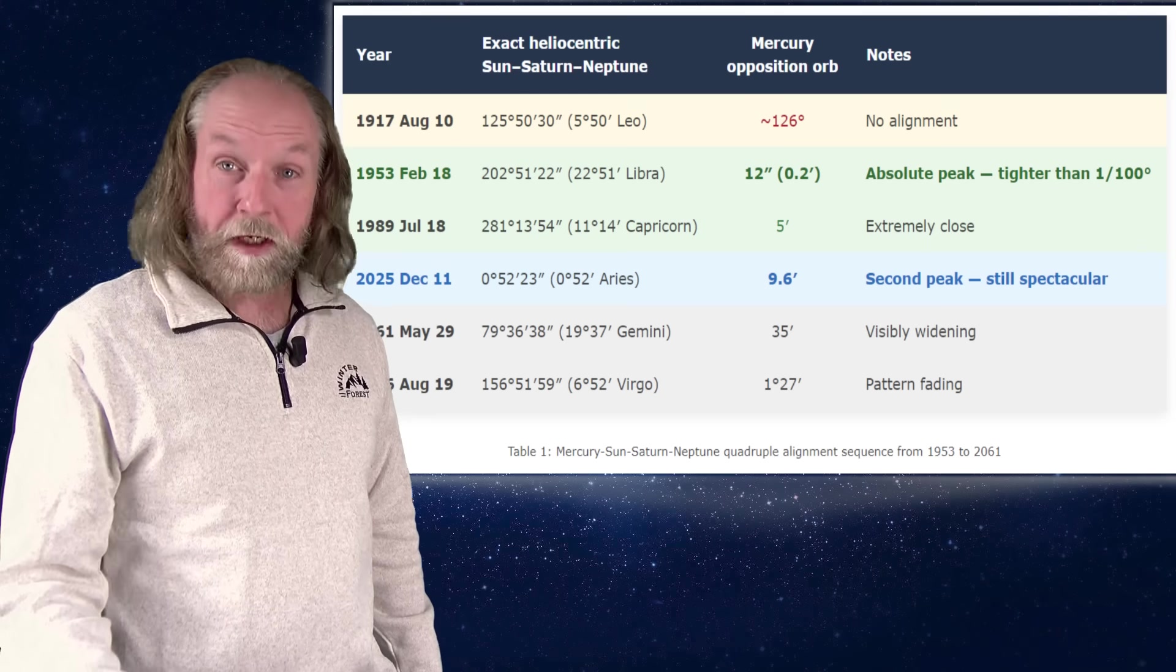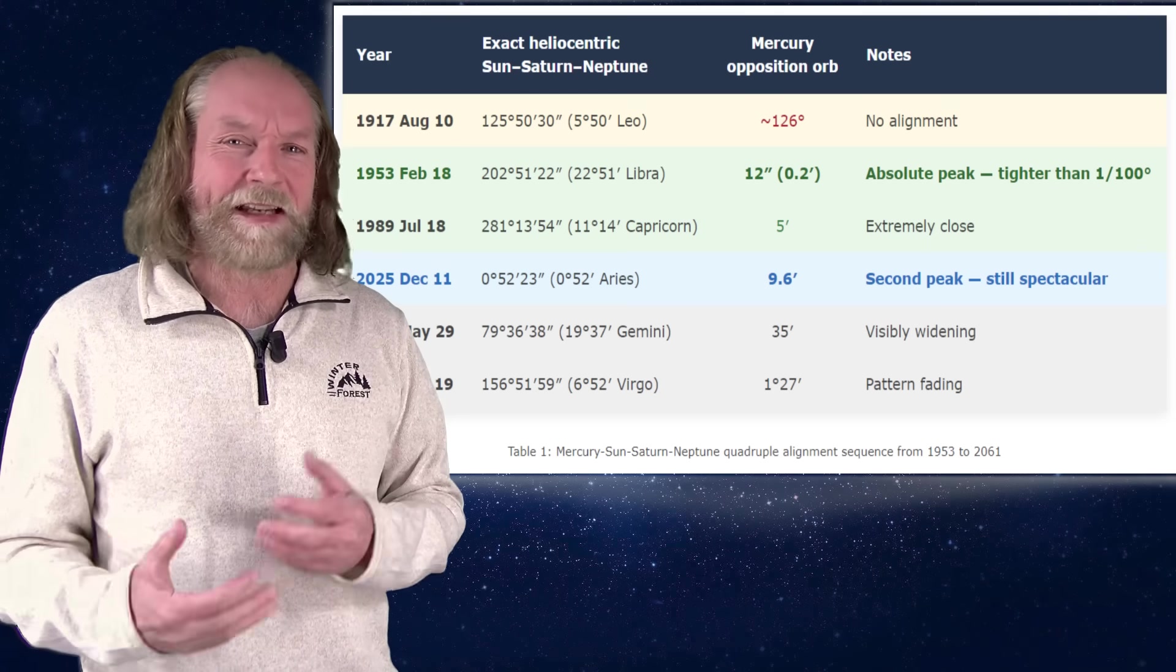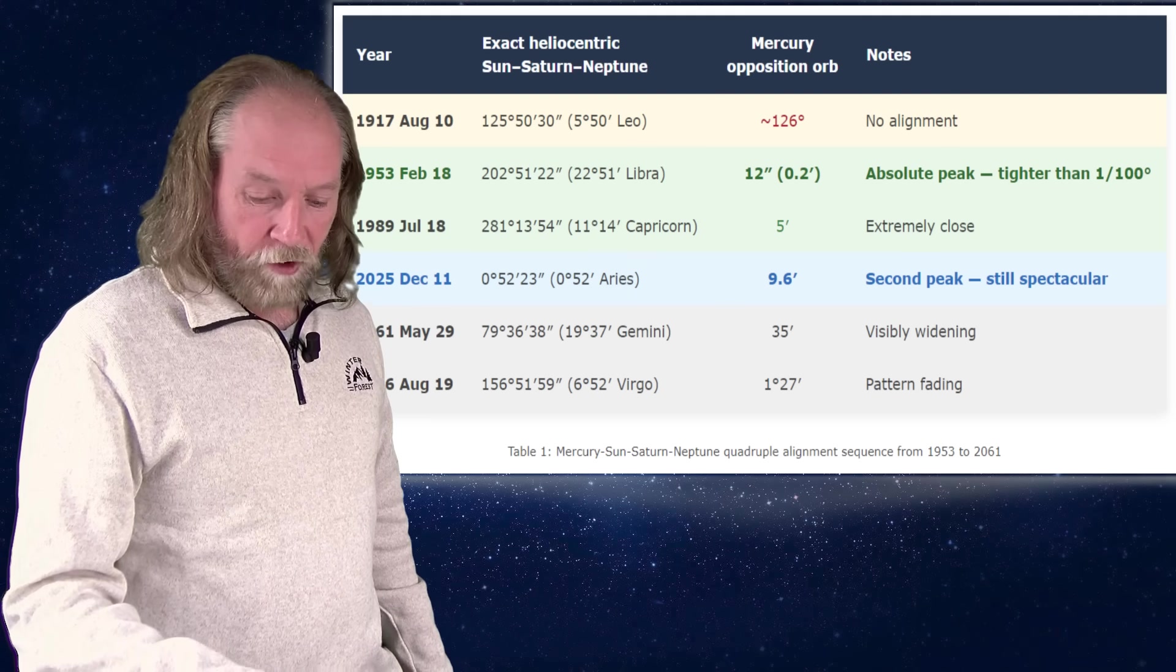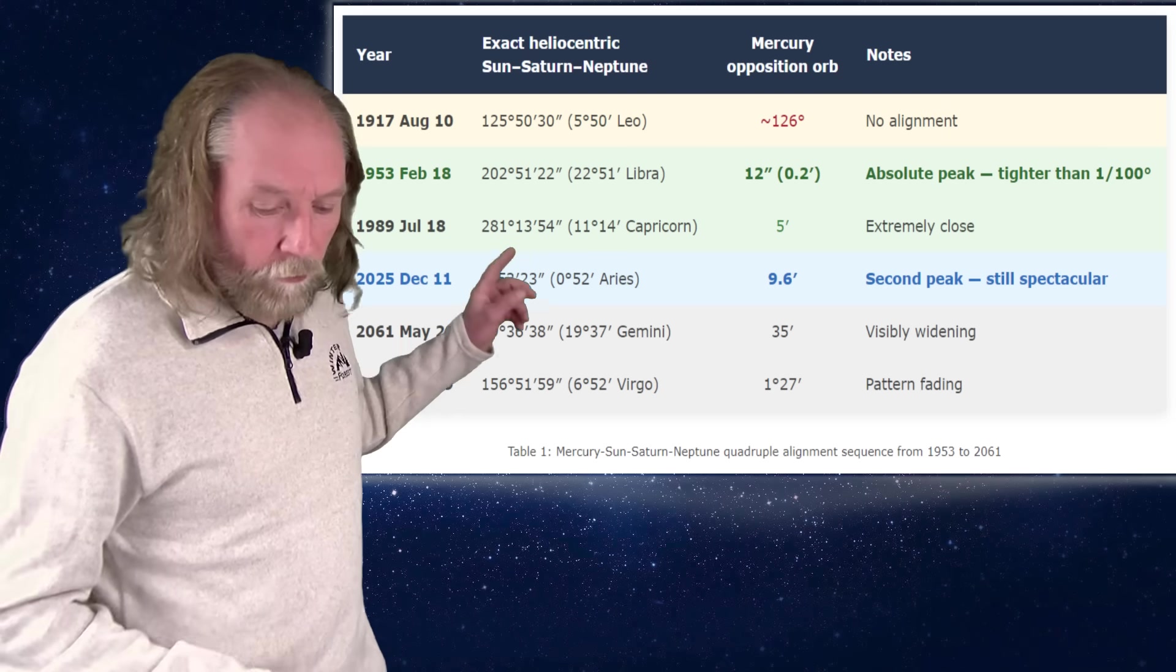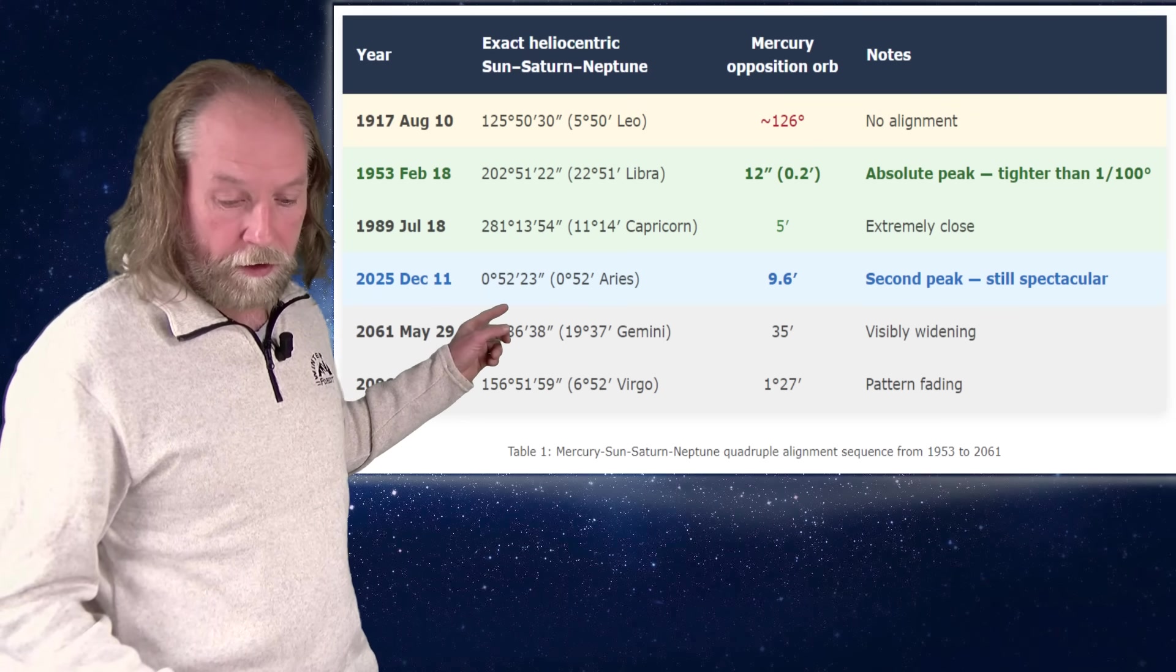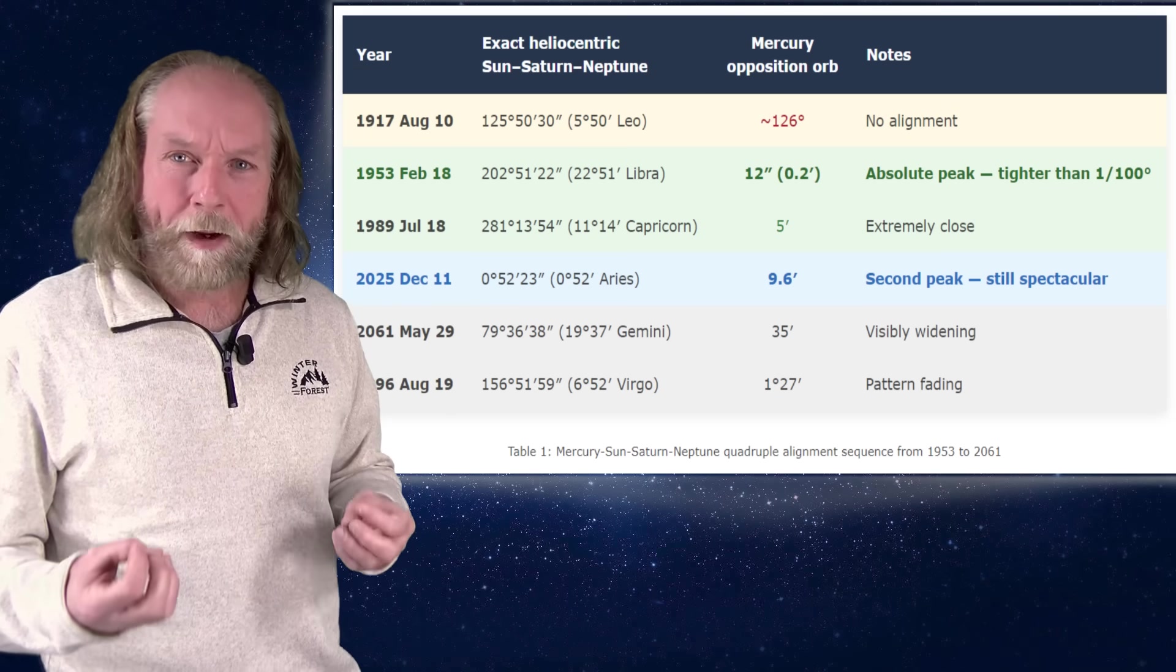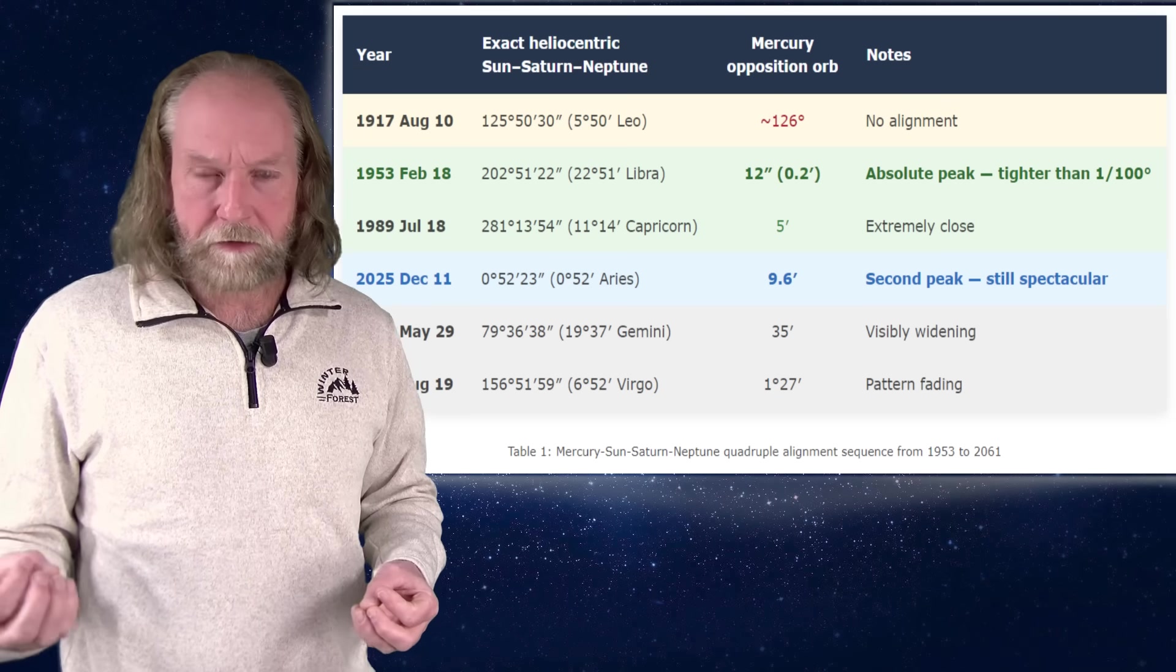So I looked at when it started and when it faded. And on this table here, which you can also look up on the website, I have an article about this, a bit technical. If you are interested in the specific geometry, you can look up the article on the website. I will put a link in the description box. In this table, we see that it started after 1917 because Mercury was really off there. But after 1917, this quadruple pattern turned on dramatically, being extremely exact in 1953.